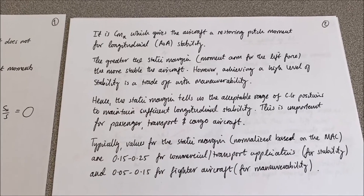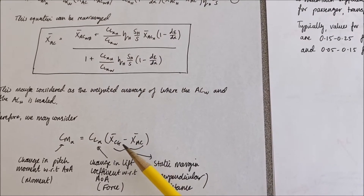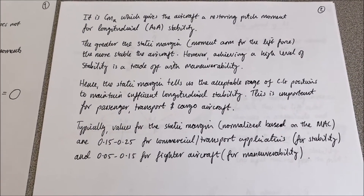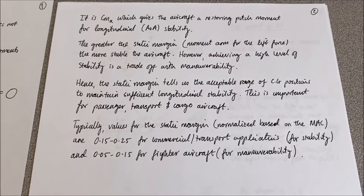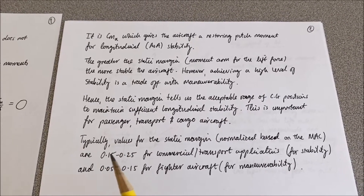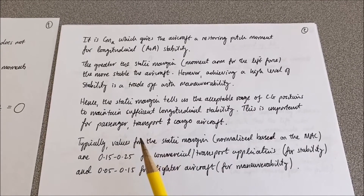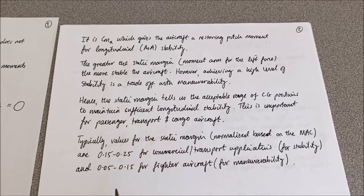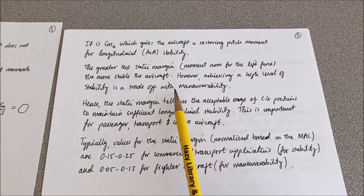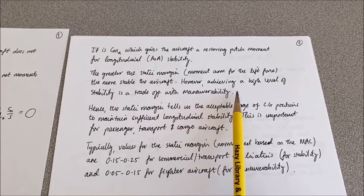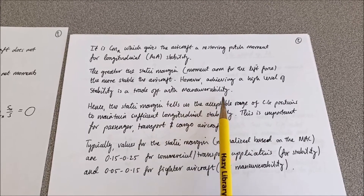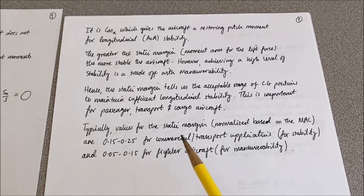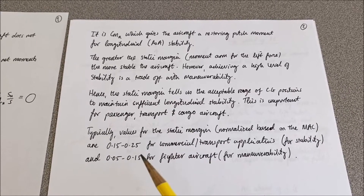What the static margin tells us, using this equation, is an acceptable range for where the centre of gravity position can be to maintain longitudinal stability. That's important for certain classes of aircraft, for example passenger airliners and transport aircraft, because the aircraft needs to be stable. But it's not so important for a fighter aircraft because of the trade-off with manoeuvrability — it's more important that a fighter aircraft is manoeuvrable than stable. You can see in the two examples given that a fighter aircraft typically is stable, but only just above zero.